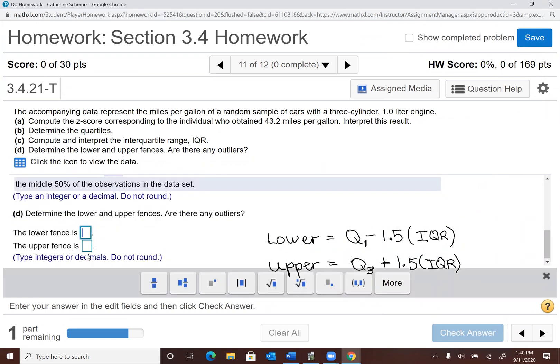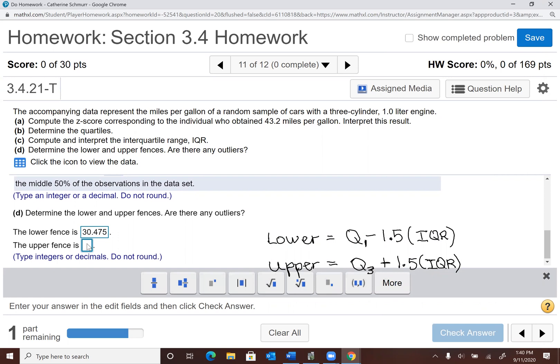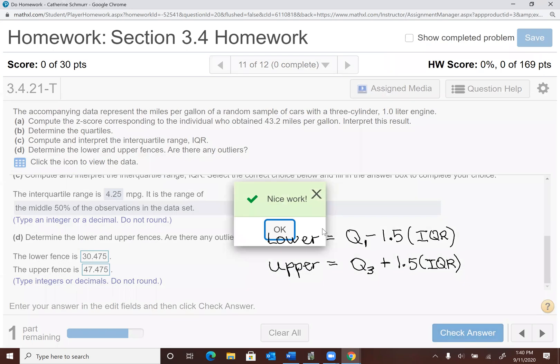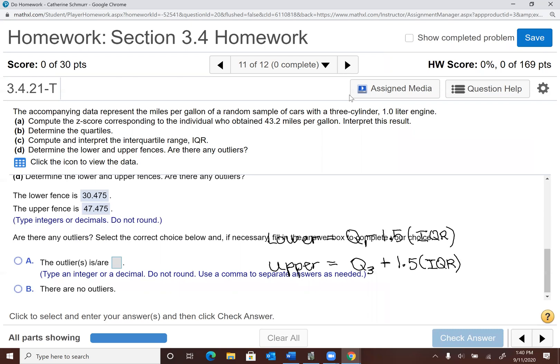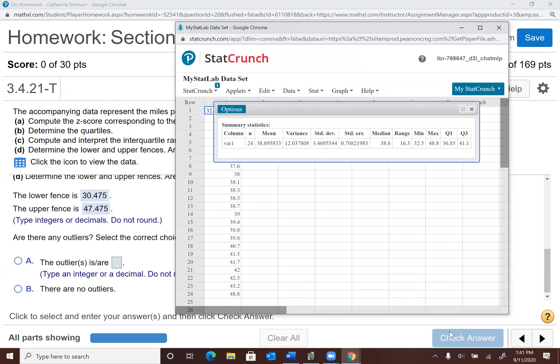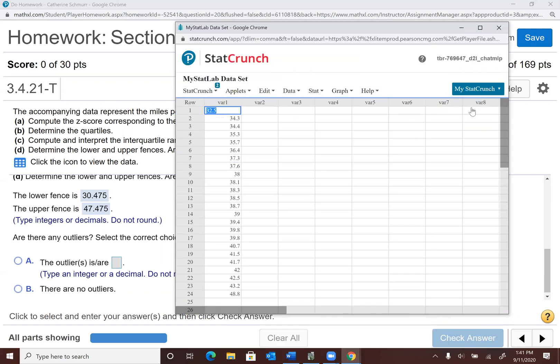Okay, so that was 30.475 and 47.475. Okay. Now the last part says, are there any outliers? So we found these fences. Any number that is below the lower fence or above the upper fence is going to be an outlier. So I'm going to actually come back to StatCrunch. And I'm going to sort my data just so I can see really easily whether anything is below 30.475 or above 47.475.